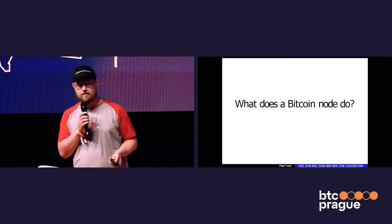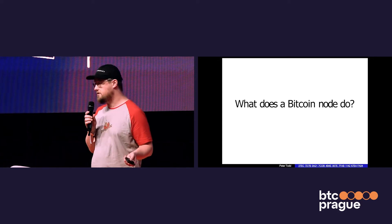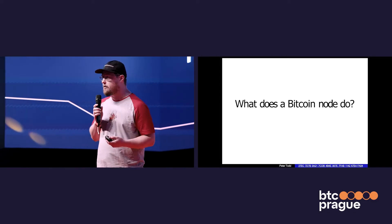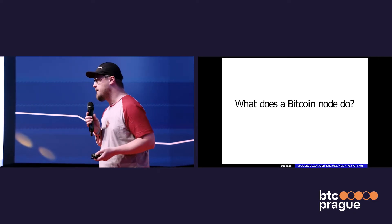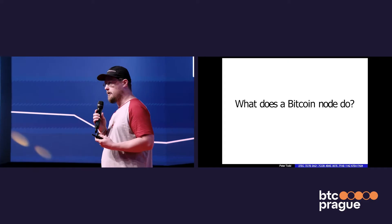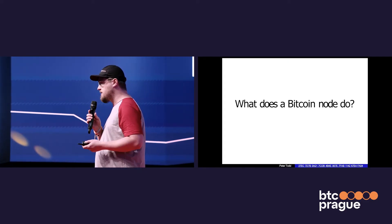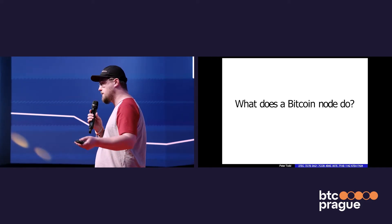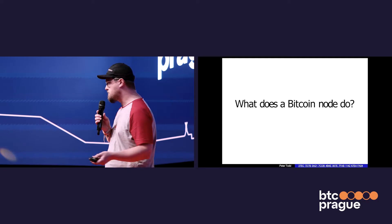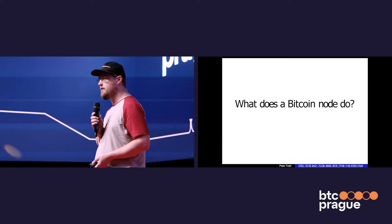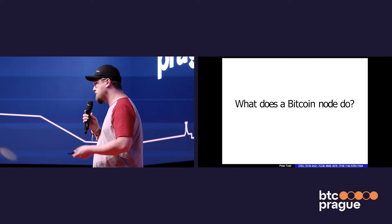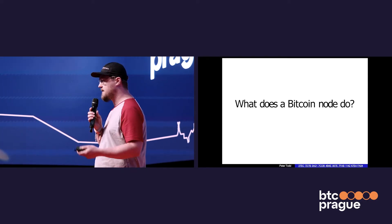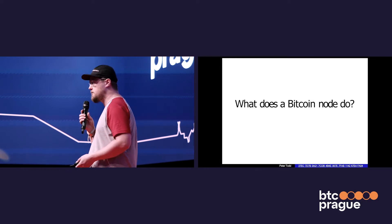What does a Bitcoin node do? A Bitcoin node does a lot of things, and there are actually multiple different types of Bitcoin nodes. First and foremost, a Bitcoin node distributes information around. Bitcoin nodes run on a computer and connect to other computers. When they see new information about Bitcoin blocks and transactions, they pass it from one node to another. Some nodes only process transactions, other nodes do both. You also have nodes that store archival data and nodes that just store the UTXO set.